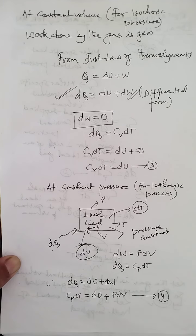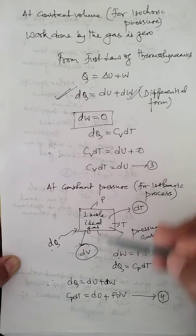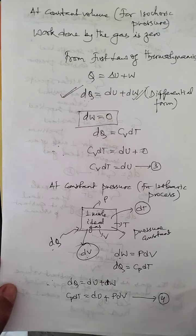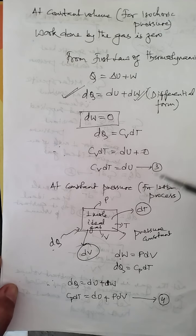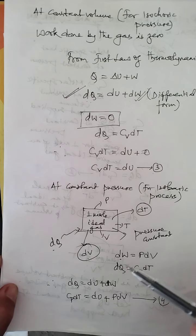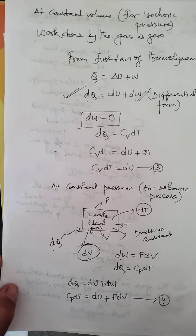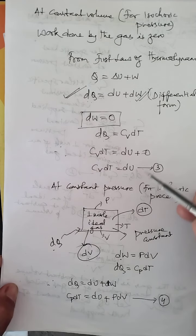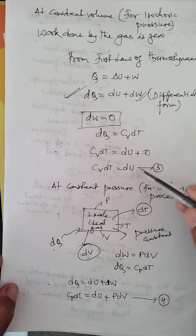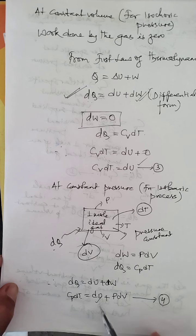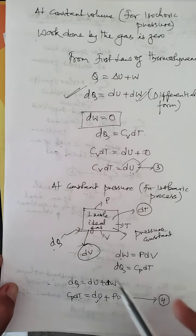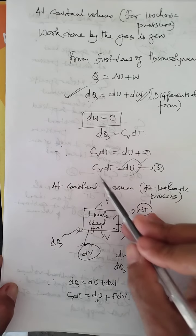Now under these two conditions, if you observe carefully, in both processes the temperature of the gas is raised by the same amount dT. For an ideal gas, the internal energy depends only on temperature, so the change in internal energy dU is the same in both processes. Therefore, from equation three, dU = Cv · dT. I substitute this into equation four.